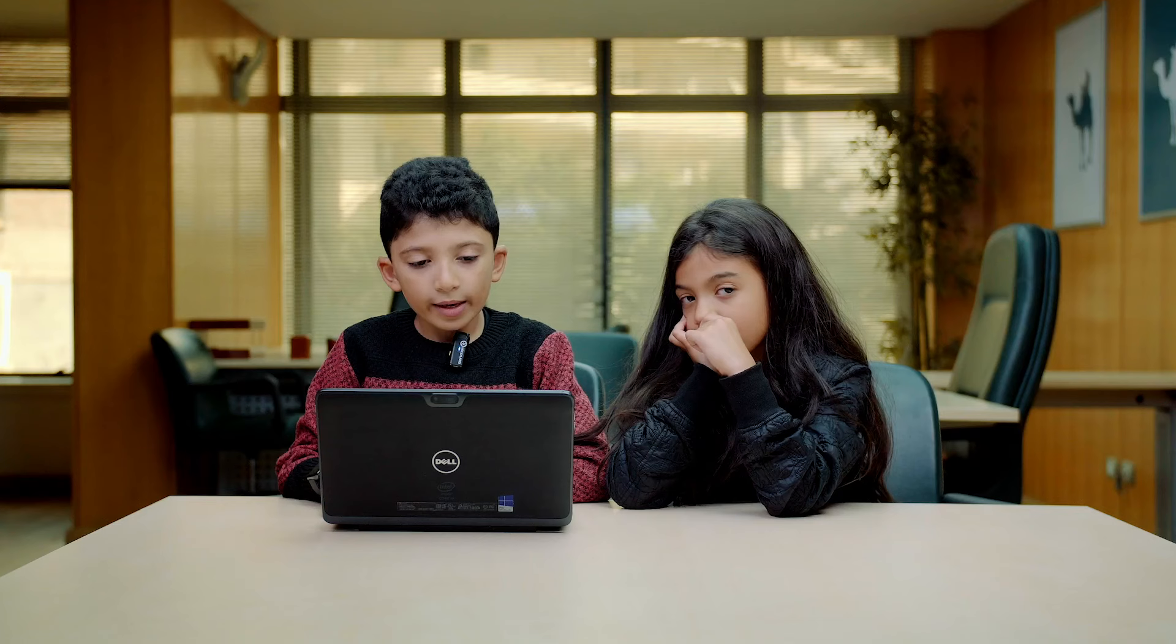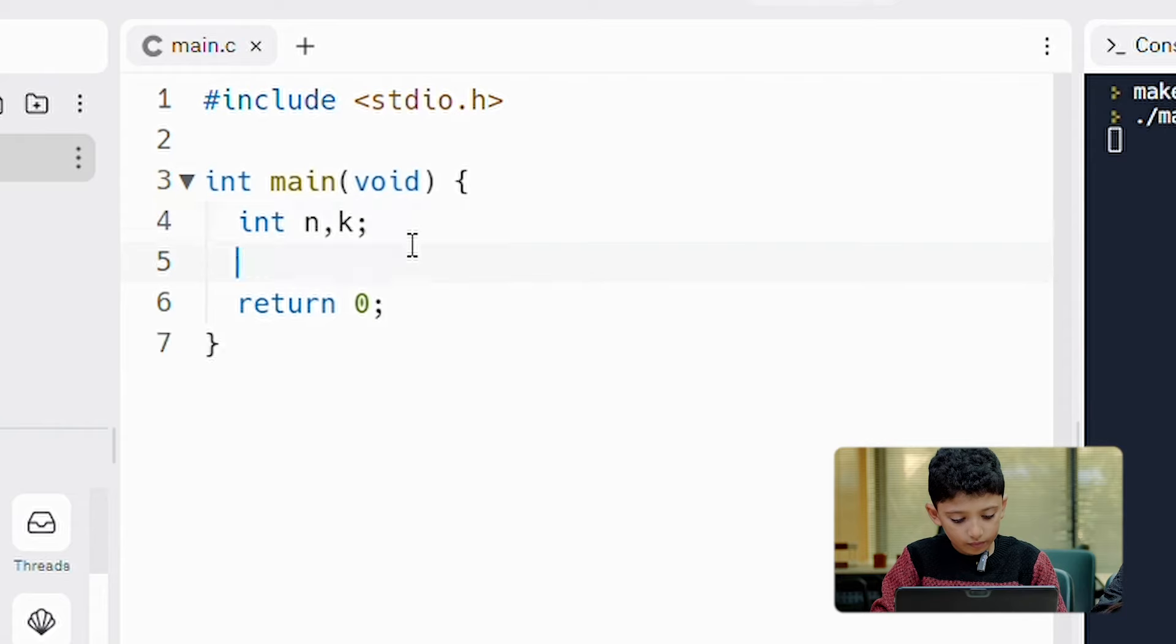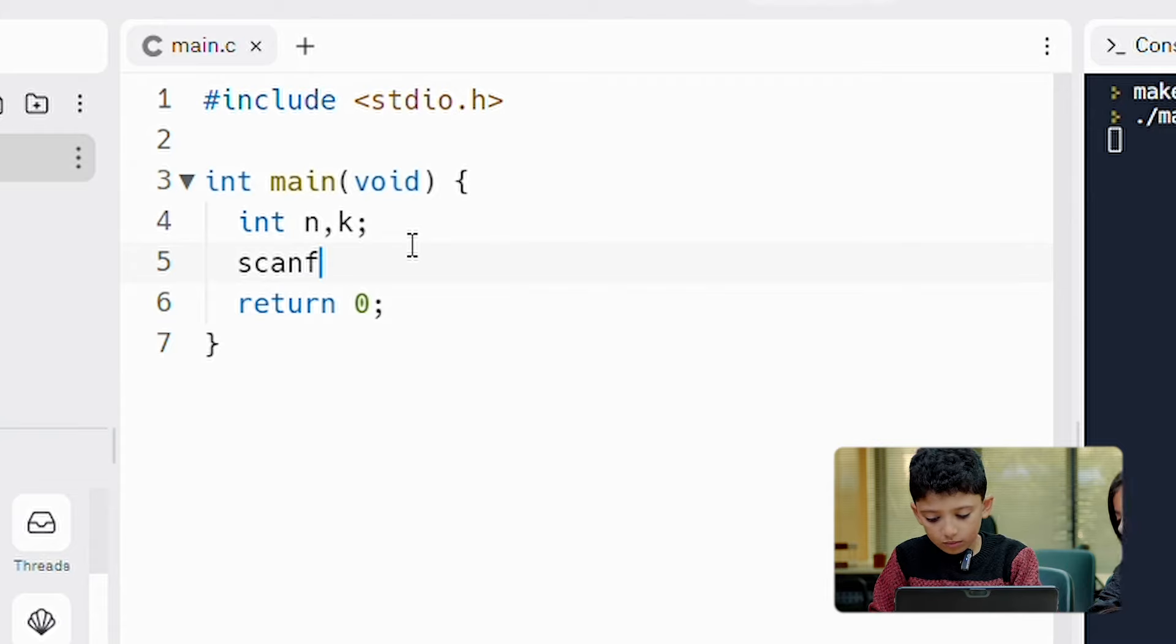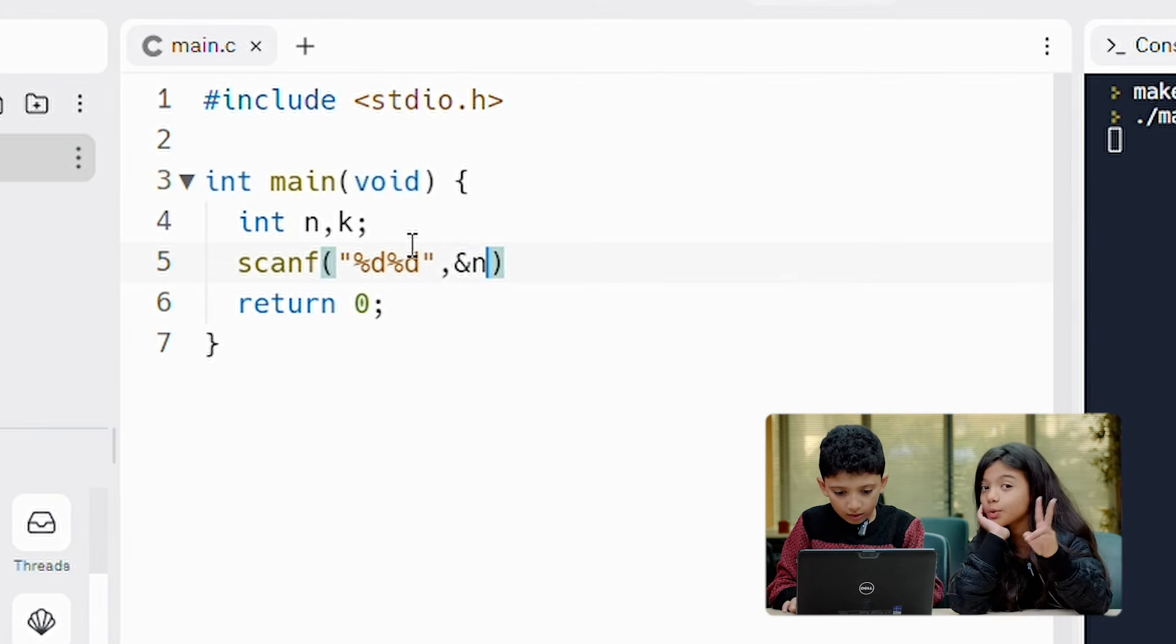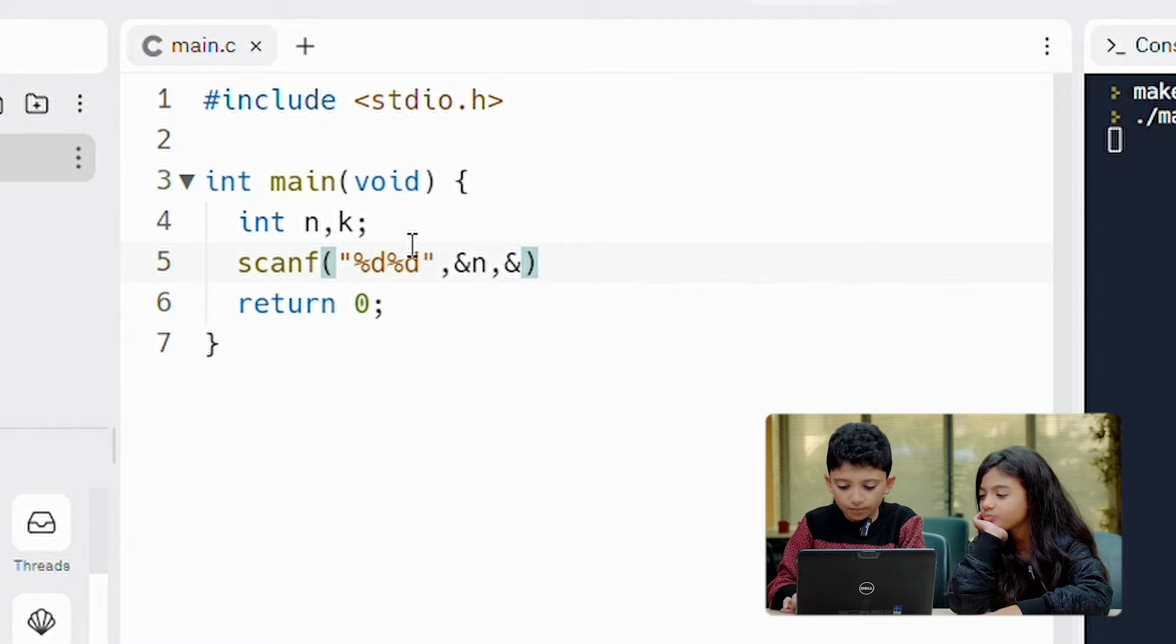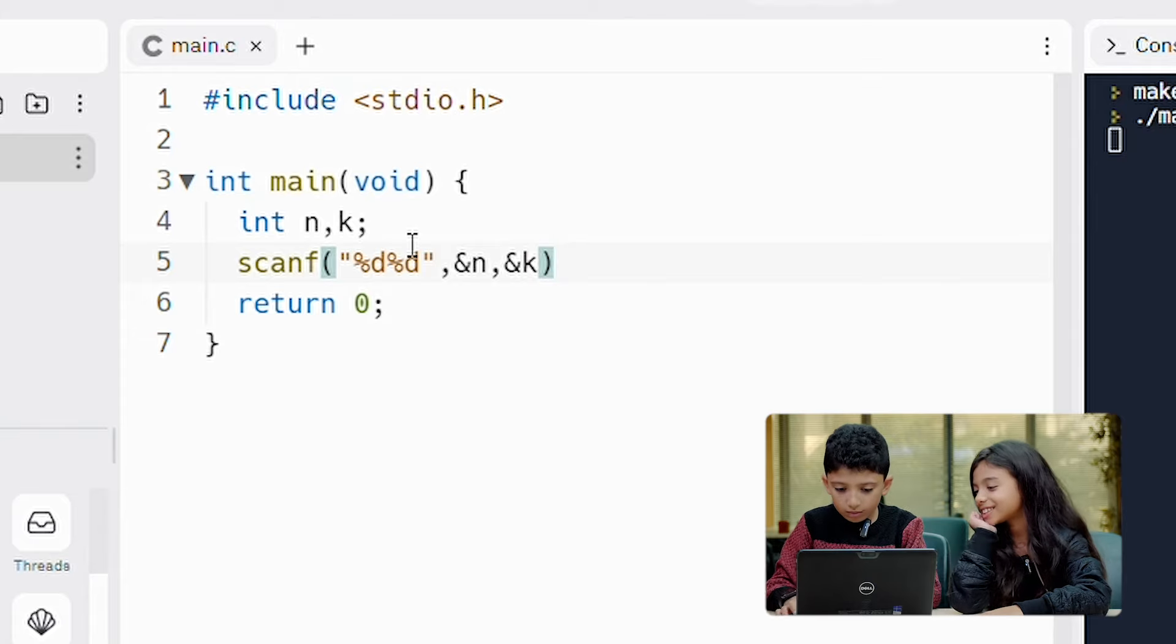Why did you declare n and k? The n which is the number we need, the number that we're using. K means the number of operations. I will do scanf. The brackets, and then I'll do double quotes. I'll write percent d percent d because we have two variables. Comma, and n, comma, and k. And then the semicolon, don't forget it.